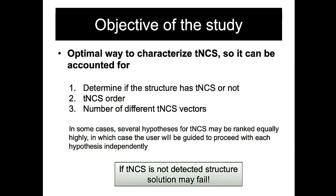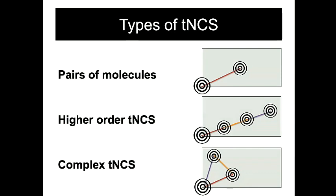The objective of our study is to find an optimal way to characterize TNCS so it can be accounted for. First, we determine if the structure has TNCS or not, and if it does, we determine the TNCS order — how many molecules are related by any translation vector — and the number of different TNCS vectors. In some cases several hypotheses for TNCS might be ranked equally high, in which case the user will be guided to proceed with each hypothesis independently. Depending on the type of TNCS, we have three groups: pairs of molecules, higher-order TNCS, and complex TNCS.